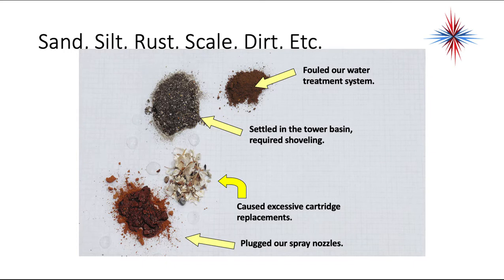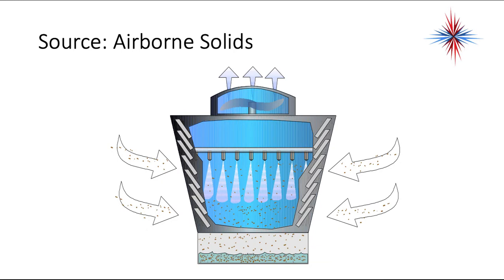Here are some examples of things that can be found in a tower system: a failed water treatment system at the top, settled solids in the tower basin requiring shoveling, excessive cartridge replacements, and plugged spray nozzles with what looks like rust and iron buildup. Some contaminants come in through airborne solids — things in the air being pulled into the tower that contaminate the water and settle at the bottom.